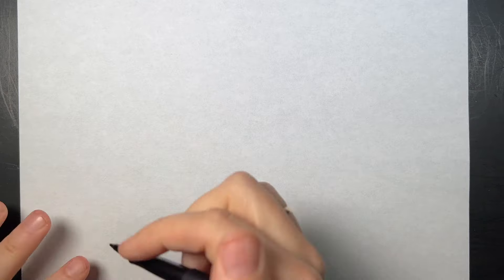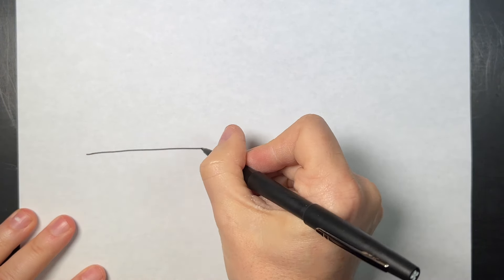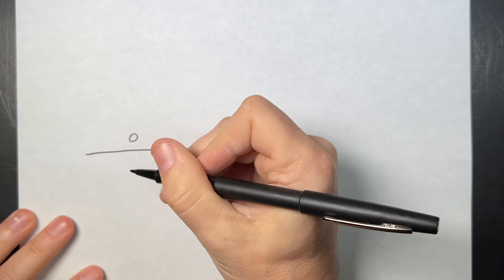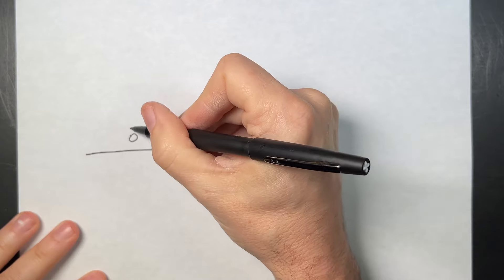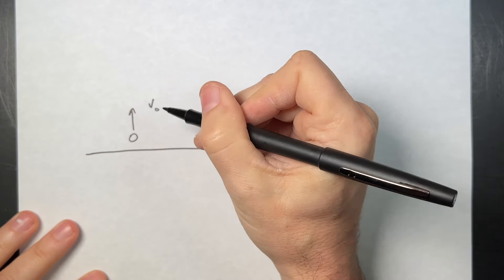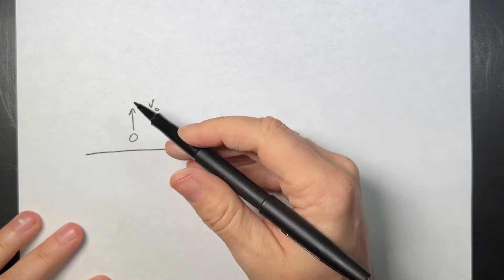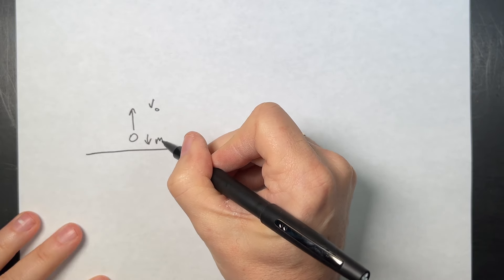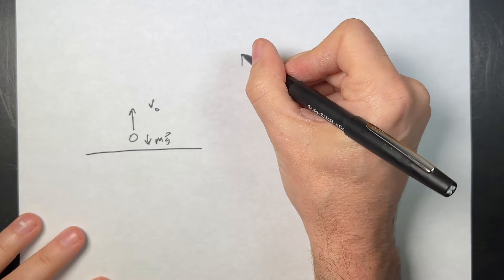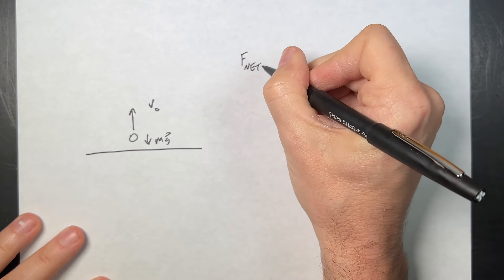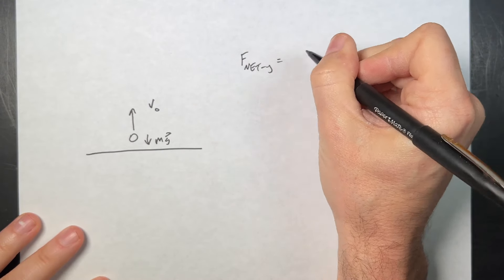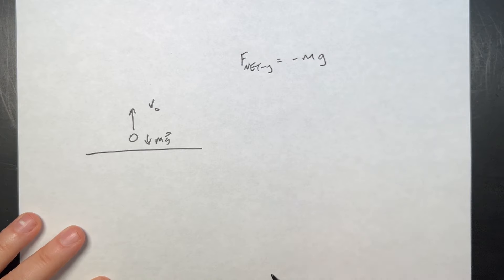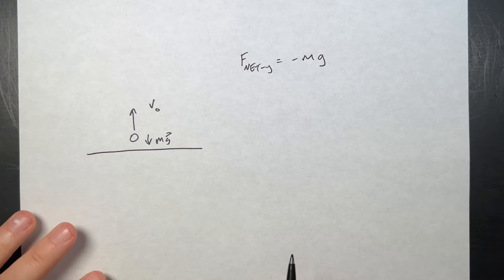Let's start from the very beginning — model the motion of a ball with no string so we can have a comparison, then go to the string, and then do it even better. This is not super useful for a lot of cases, but imagine that I throw a ball straight up with a velocity v₀. It's going to be a one-dimensional problem with a downward gravitational force mg.